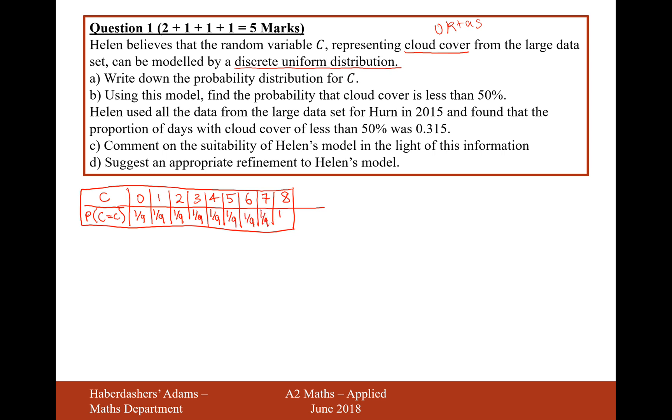That's if we assume that what Helen believes, that the cloud cover is a discrete uniform distribution. So this is what Helen believes, that for each measure on the octars, there's one-ninth that that will happen. So that's the answer to part A. Let's now move on to part B.